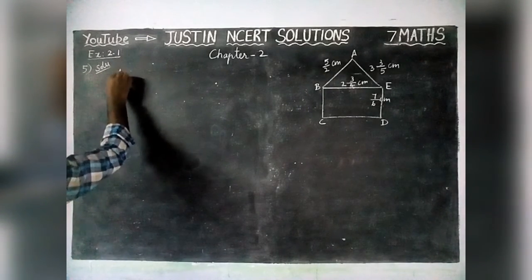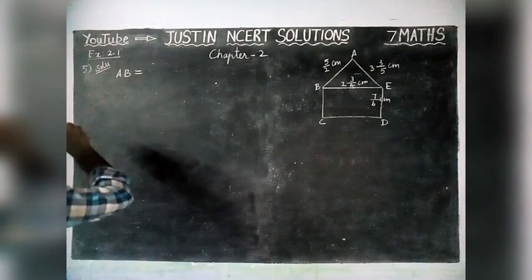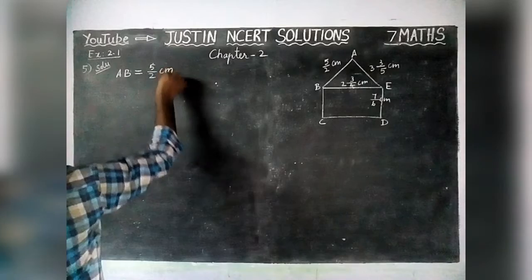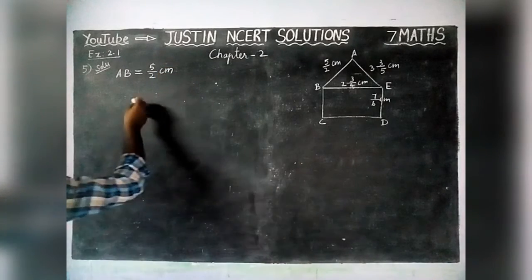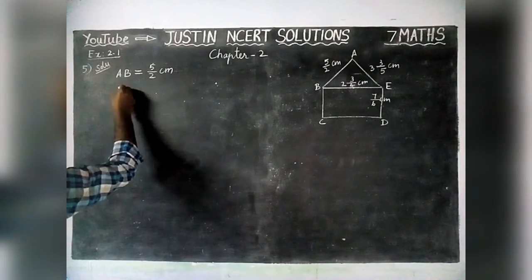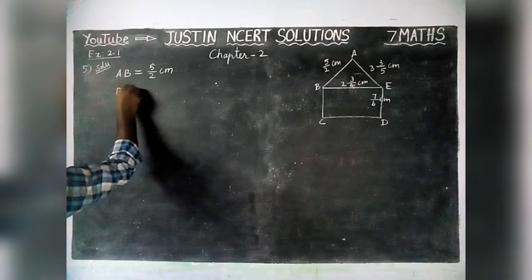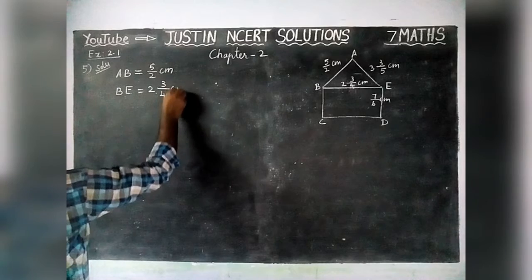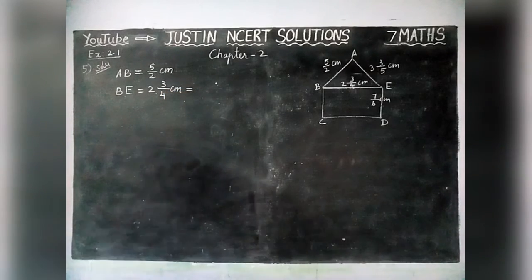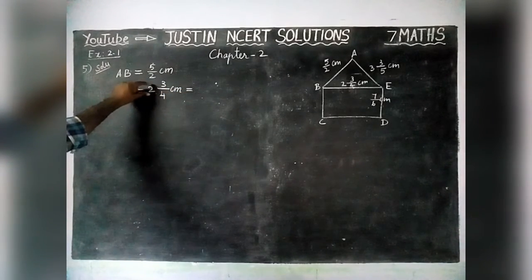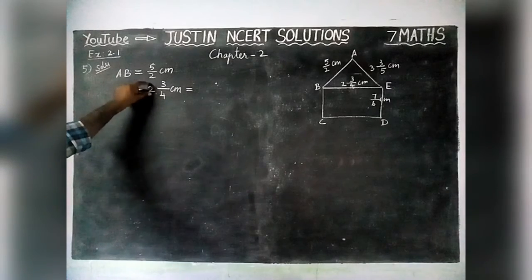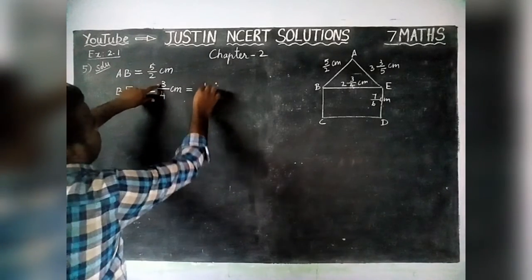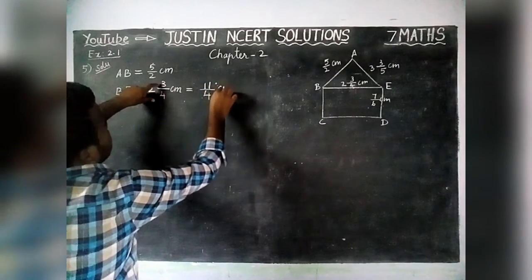First, in the triangle, AB is equal to 5/2 centimetre — that is an improper fraction. Next, BE is a mixed fraction: 2 and 3/4 centimetre. So we are going to convert this into an improper fraction. We multiply the whole number by the denominator: 2 into 4 is equal to 8, and 8 plus 3 is equal to 11. So BE equals 11/4 centimetre.